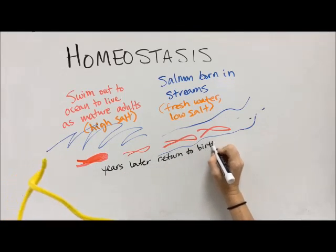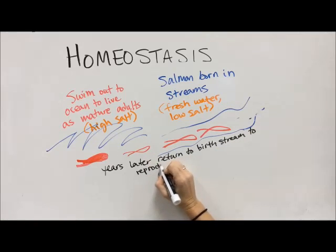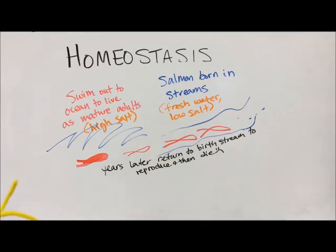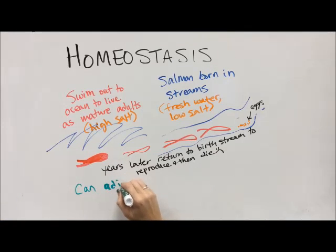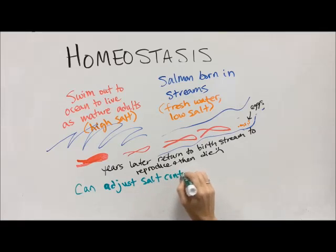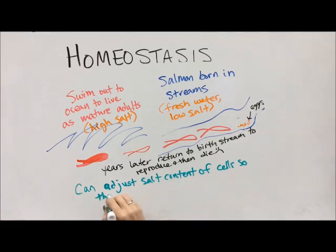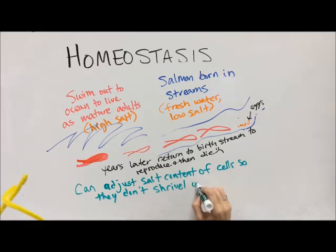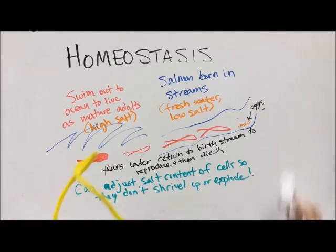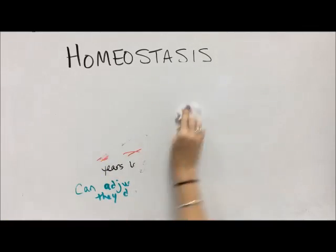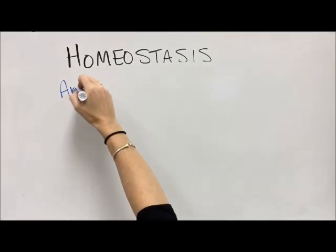At the end of their lives, salmon swim back up the stream to mate, returning to their birth stream to reproduce, and then sadly they die after reproducing. They leave their eggs in the stream to start the cycle all over again. Their homeostasis is that they can adjust the salt content in their cells, unlike most other animals, so they don't die moving between salt water and fresh water — whereas other animals would shrivel up, die, or completely explode.